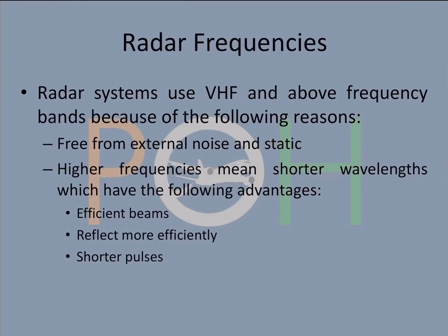Let's look at the radar frequencies. Generally, the radars use VHF and above for the following reasons: since they are powerful, they are free of static and external noise, and higher frequencies of course mean shorter wavelengths. The advantage with shorter wavelengths is they are efficient beams, meaning they can focus very well, and they reflect more efficiently and they can create shorter pulses. That is why VHF and above frequencies are used for radar operations.